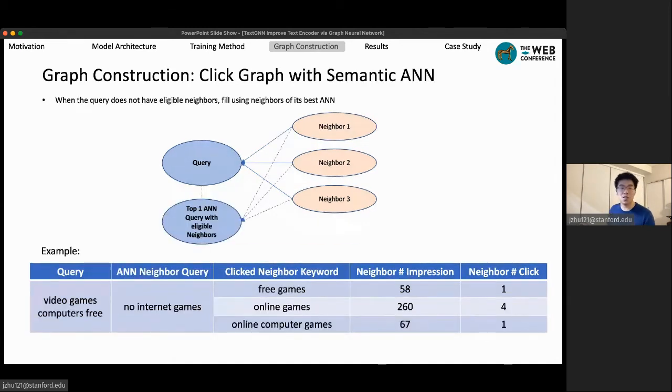And there are cases where we have queries that are hard to find any ads that have been shown and clicked many times. In this case, we use a semantic ANN to identify similar queries with neighbors, and then use the neighbor of the ANN as approximate neighbors. So ANN is approximate nearest neighbors. So in this case, the query video games computers free, we cannot find any keywords in historical logs that has been clicked many times.